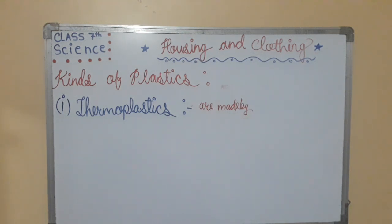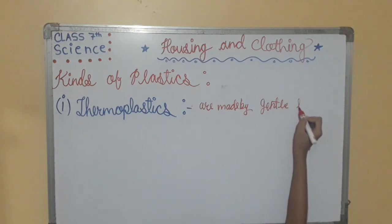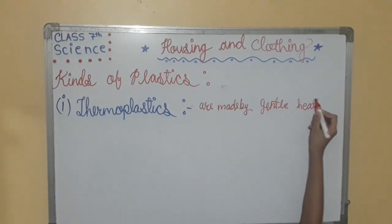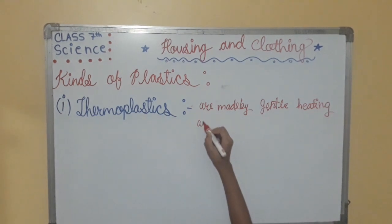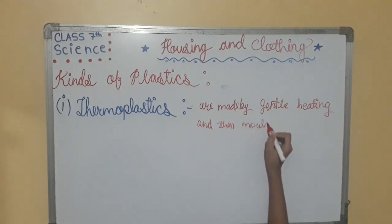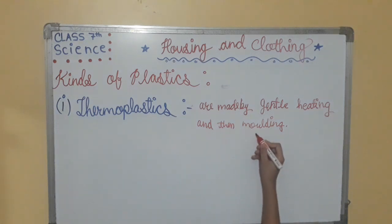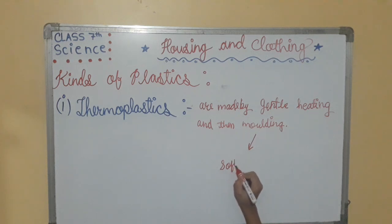Thermoplastic articles are made by gentle heating and then molding. The molded articles can be reused by softening through gentle heating and then giving them a new shape.